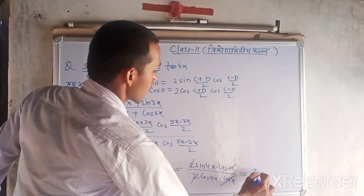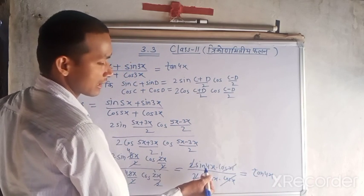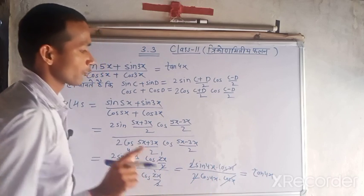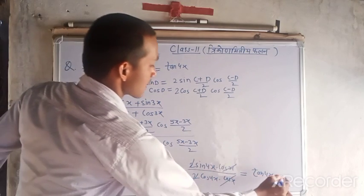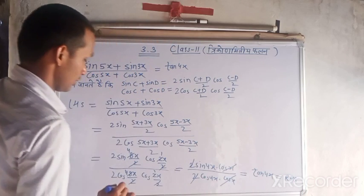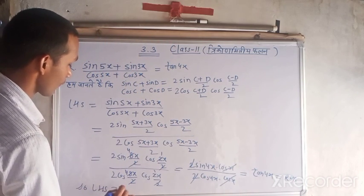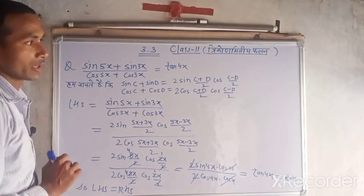We know that sin theta upon cos theta equals tan theta. This tan 4x is the same as our RHS that we have given. We can say that LHS equals RHS. Thank you.